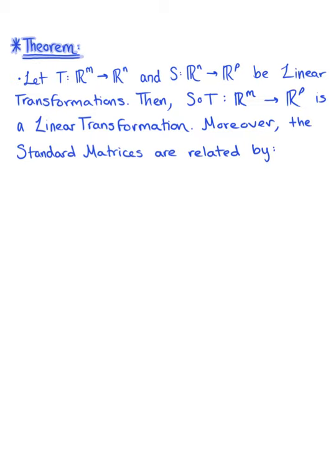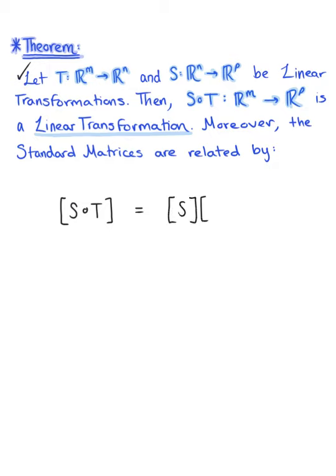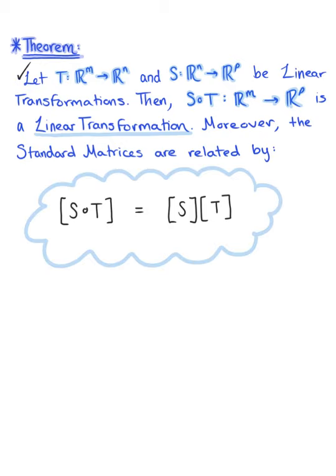Here we are looking at a theorem for invertible linear transformations. This theorem begins by letting T be a linear transformation from Rᵐ to Rⁿ, and let S be a linear transformation from Rⁿ to Rᵖ. Then the composition S of T from Rᵐ to Rᵖ is also a linear transformation. Moreover, the standard matrix of the composition S∘T is equal to the product of the standard matrices: the standard matrix of S multiplied by the standard matrix of T.